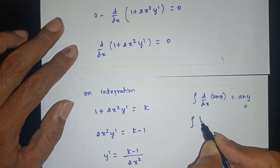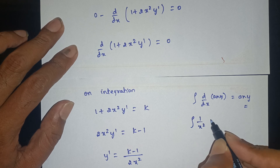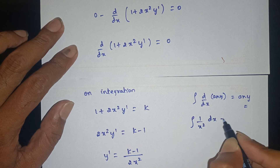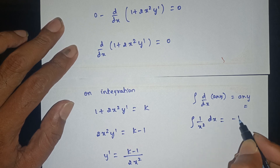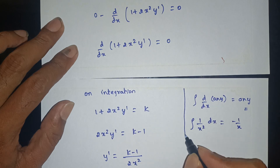The integration of 1/x² dx gives −1/x. This formula is used as the key integration step.